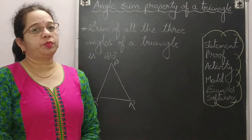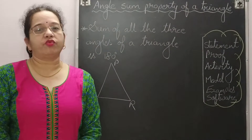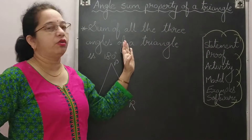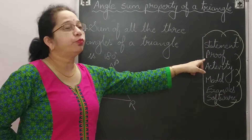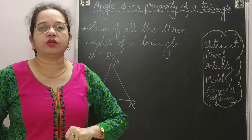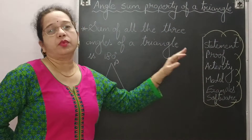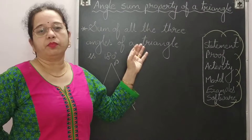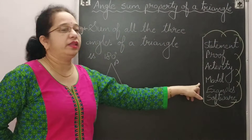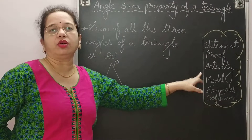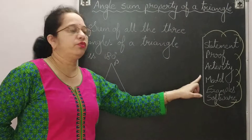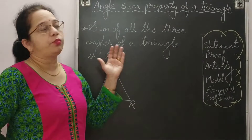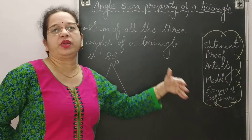Hello friends. Today I am going to explain the angle sum property of a triangle. I will explain this property in different ways. The first is the statement, for which I will give you a proof — how to prove that the sum of all three angles of a triangle is 180 degrees. In the next video, I will explain the activity, working model, stair model, examples, and software demonstration.